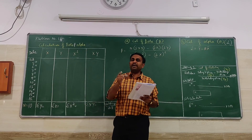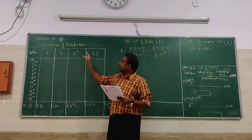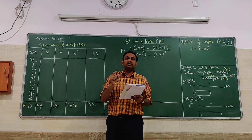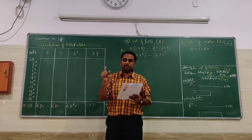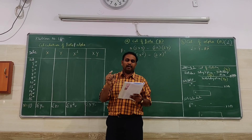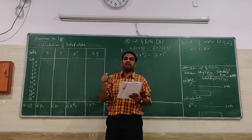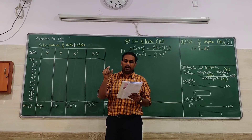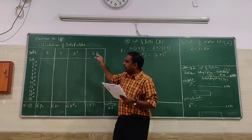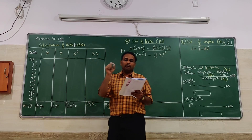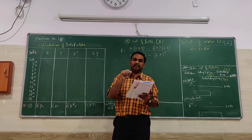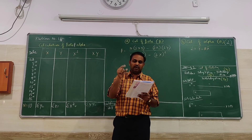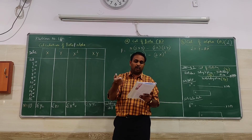Parallel number 14. This is a bit different from the previous one, but it is about calculation of beta and alpha only. The problem goes like this: consider the daily sales price of Tata Auto and NSC index for the period 5th February to 16th February, calculate beta value and the alpha value. Three columns are given: the 1st column is date starting from 5th February to 16th February, but in between you don't have 10th and 12th — it is like a holiday.